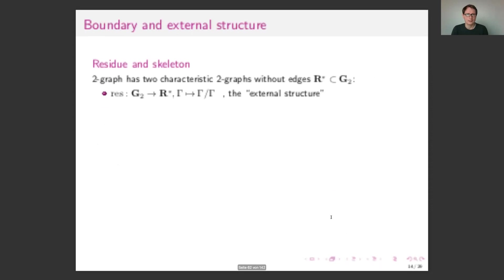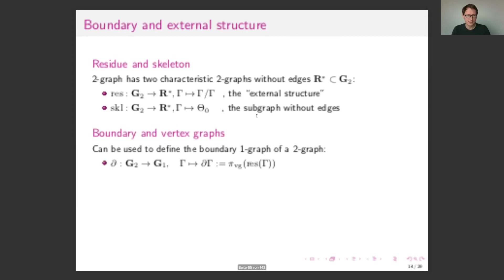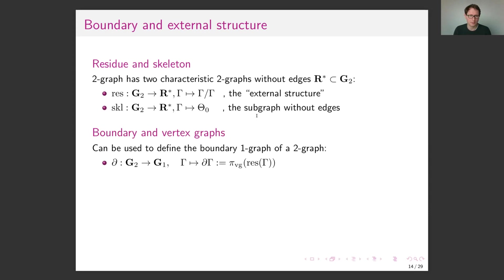For the Hopf algebra, the residue structure is important. Residues are two-graphs without any edges, and the residue of a diagram is simply its contraction of itself — the external structure. The skeleton is just the vertex structure, the graph without any edges. Interestingly, this is essentially the notion of boundary in these geometries: the vertex graph of the residue can be used to define the boundary of the geometry, equivalent to how one defines the boundary of pseudo-manifolds.